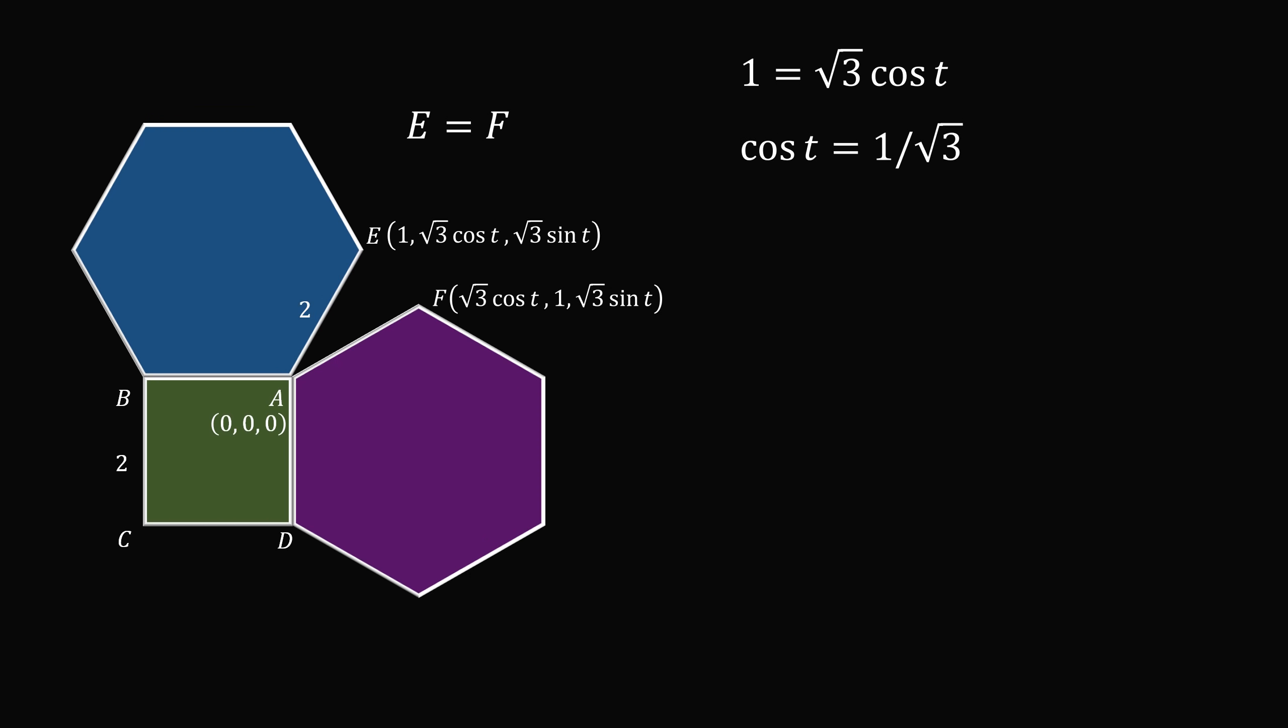This means cosine t is equal to 1 divided by the square root of 3, which means t is equal to the inverse cosine of 1 divided by the square root of 3, which is approximately equal to 54.74 degrees. And that's the answer to the first part of the question.